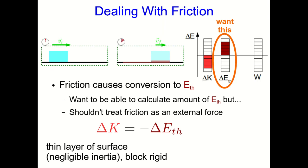I'm going to include only the thinnest of thin layers of the surface, just enough that the thermal energy is in it, but I don't have to think of its inertia. And I'm going to think the block is rigid. And so now, because I can ignore the inertia of the surface,